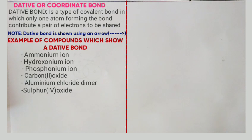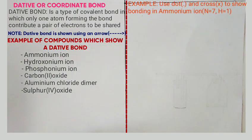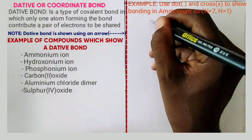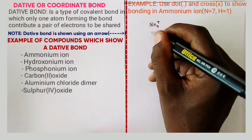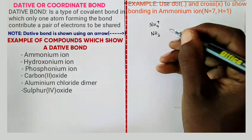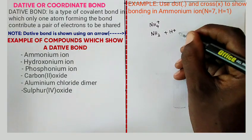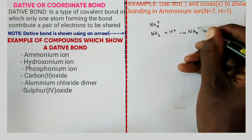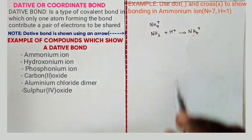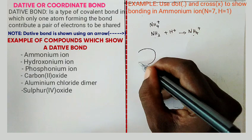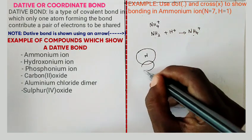We are going to look at how to show dative bonds in two examples: the ammonium ion and the hydroxonium ion. Use dot and cross to show bonding in the ammonium ion. The ammonium ion is written as NH₄⁺. This ion is formed by combining an ammonia molecule NH₃ plus a hydrogen ion to give the ammonium ion. To draw the bonding, first draw the ammonia molecule, which has one nitrogen at the center and three hydrogen atoms at the ends.